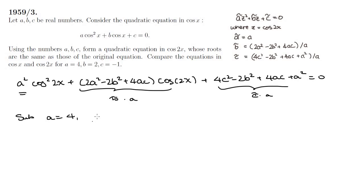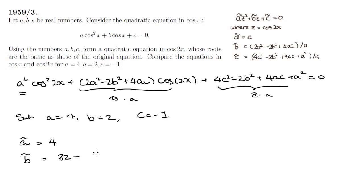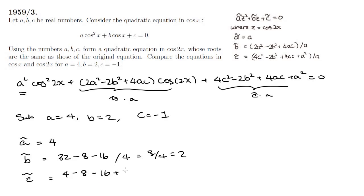Now we substitute the specific values: a equals 4, b equals 2, c equals minus 1. Ã is then 4. B̃ gives us 2a squared, which is 32, minus 2b squared, which is 8, plus 4ac, which is minus 16, all over a which is 4 — simplifying to 2. And C̃ gives 4c squared which is 4, minus 2b squared which is minus 8, plus 4ac which is minus 16, plus a squared which is plus 16 — the minus and plus 16 cancel, all over 4, giving minus 1.